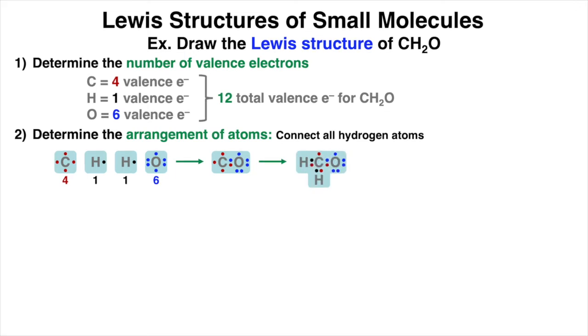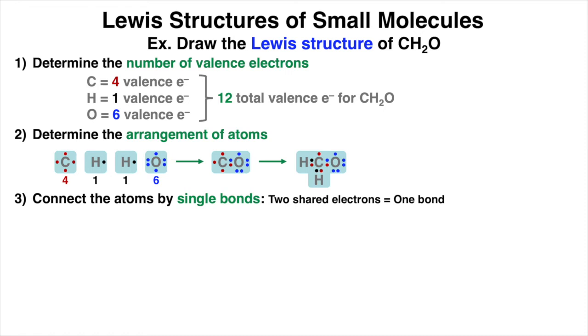And step three is then to connect the atoms by single bonds. So remember that two shared electrons makes one bond, or a sigma bond. And so far, we've drawn three single bonds in our molecule.